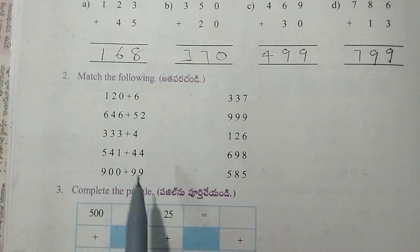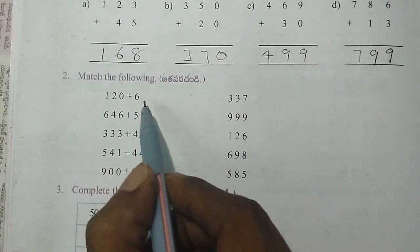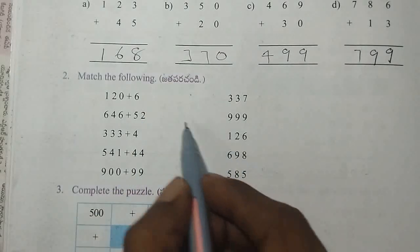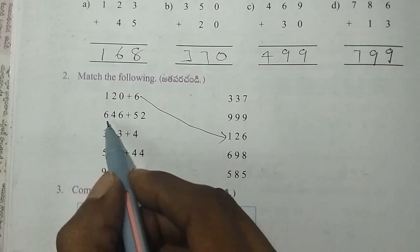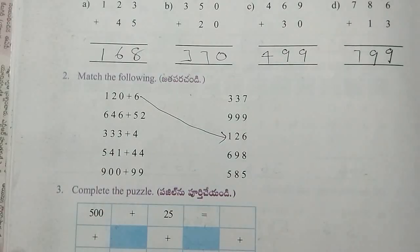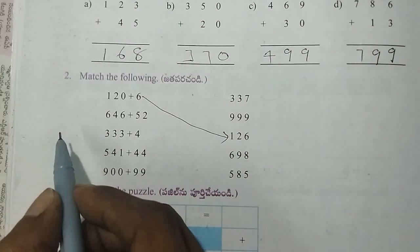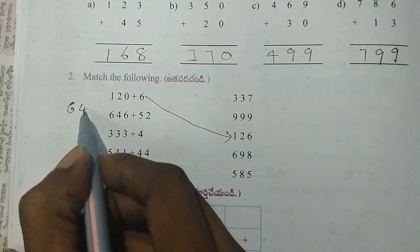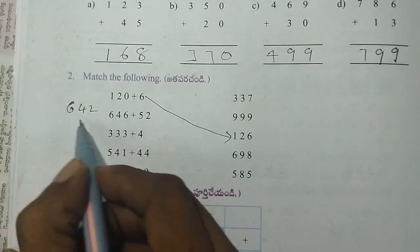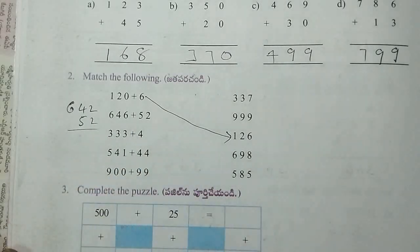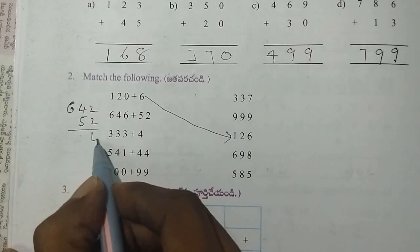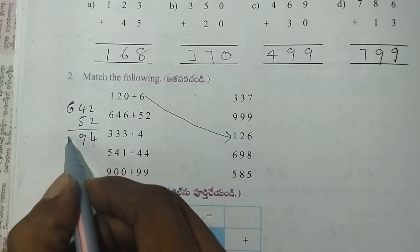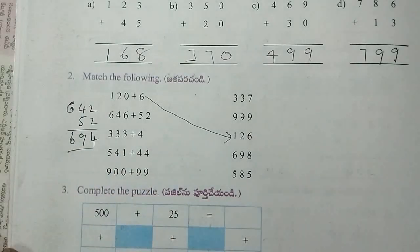Match the following. 120 plus 6, 126. Next, 6, 646 plus 52. 642 plus 52. 2 plus 2, 4. 5 plus 4, 9. 6. 6, 94.